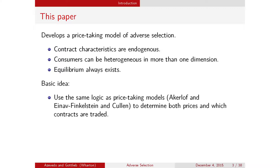I'll preview a little bit of another paper on the more normative questions of what good policies look like and what that has to do with the policies people actually use. The basic idea is that I'll use the same ideas as the price-taking models of Akerlof and Einav, Finkelstein, and Cullen to both determine the prices of contracts that get traded, and determine which contracts get traded in equilibrium.